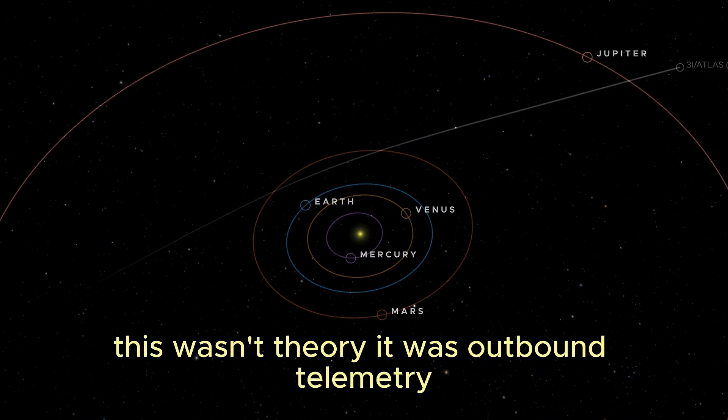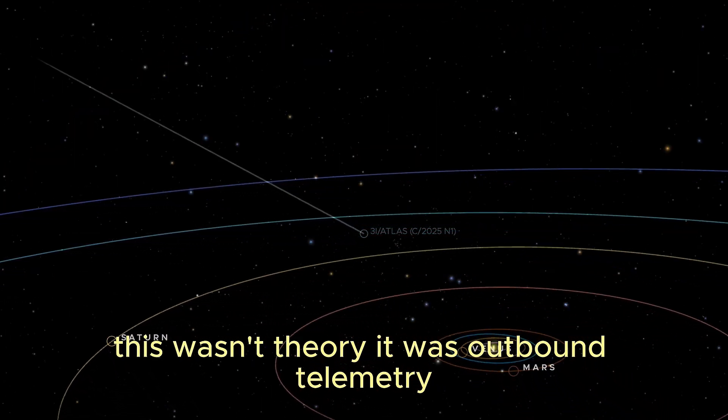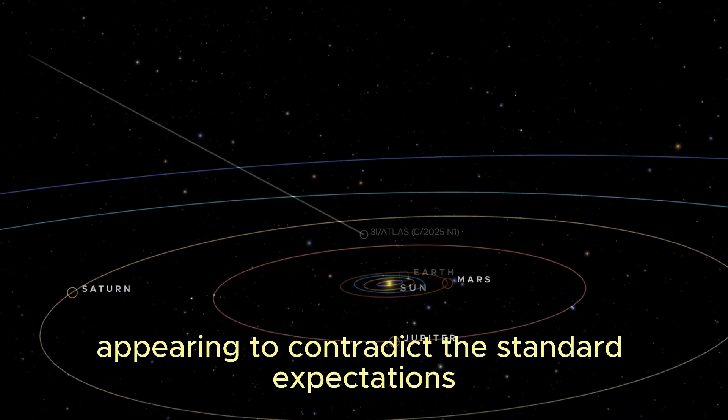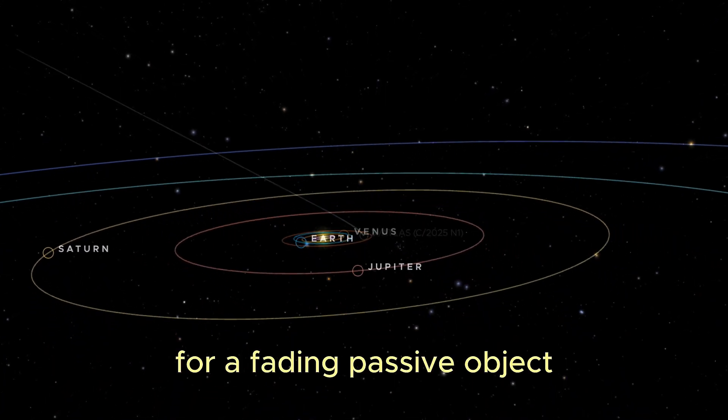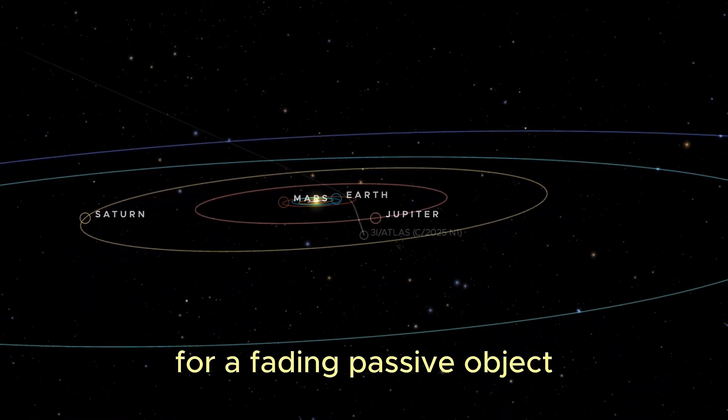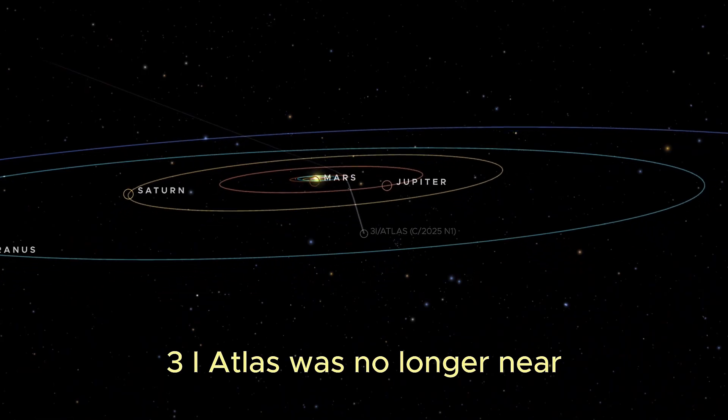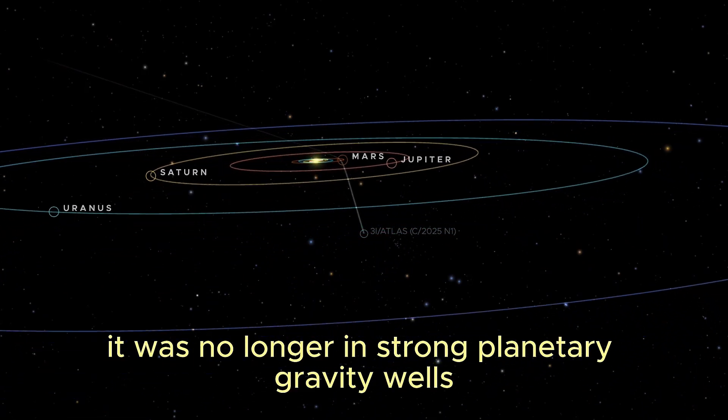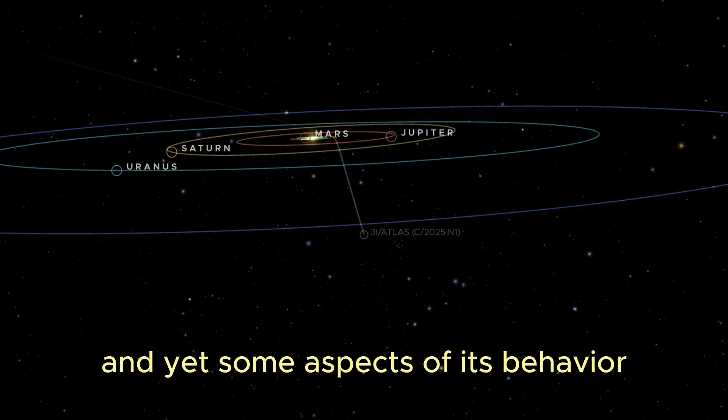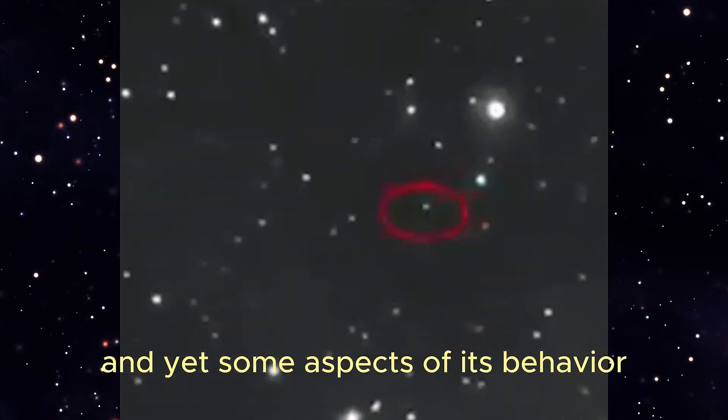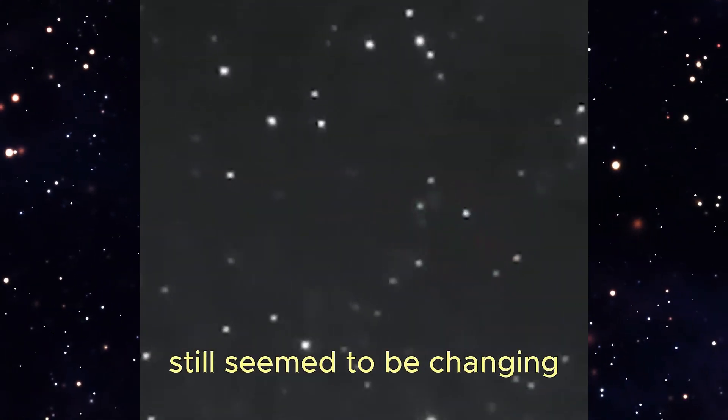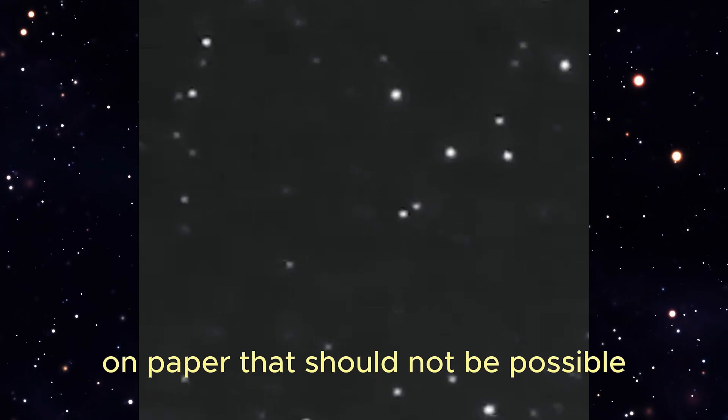To be very precise, this wasn't theory. It was outbound telemetry appearing to contradict the standard expectations for a fading, passive object. 3I Atlas was no longer near, it was no longer in strong planetary gravity wells, and yet some aspects of its behavior still seem to be changing. On paper, that should not be possible.